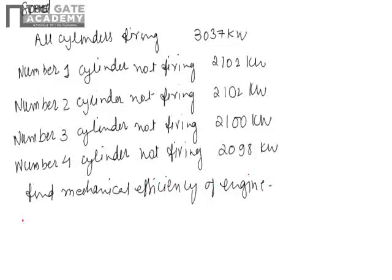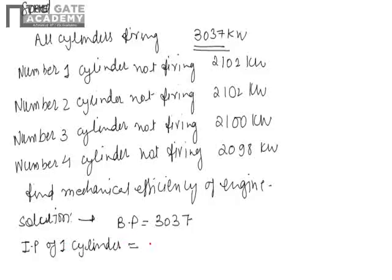Now let's solve this problem. When all cylinders are firing, BP = 3037 kW. To find mechanical efficiency we need the indicated power. We find the indicated power for each cylinder individually and then sum them. IP of cylinder 1 = 3037 − 2102 = 935 kW. Similarly, IP of cylinder 2 = 935 kW.